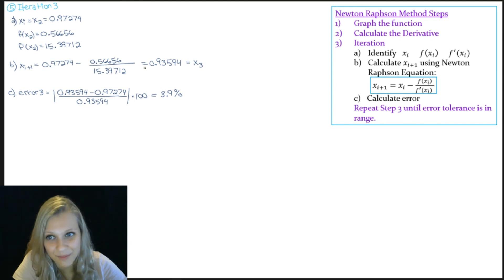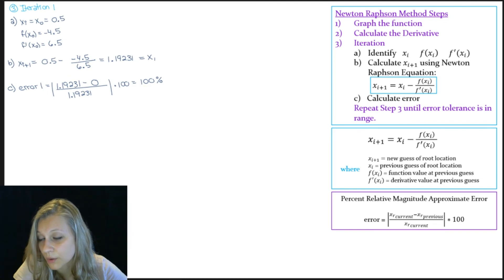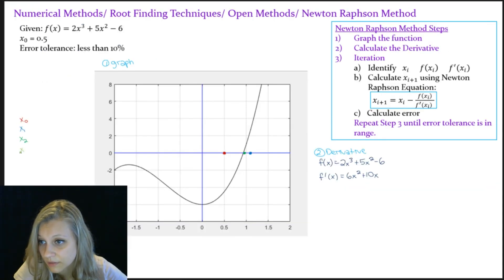And so since 3.9% is less than the 10% that we were restricted by, that means we found the answer to our problem. And the answer is this value right here. So if we go back to our graph, x of 3 is going to be about right there, which as you can see, is pretty close to the actual root value. So that's it. I hope this video helped you better understand the Newton-Raphson root finding method.